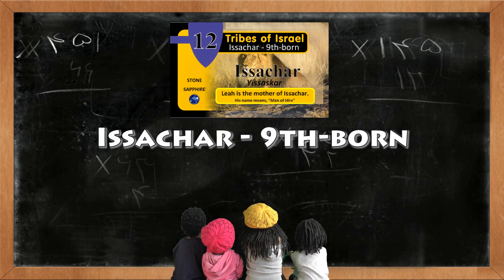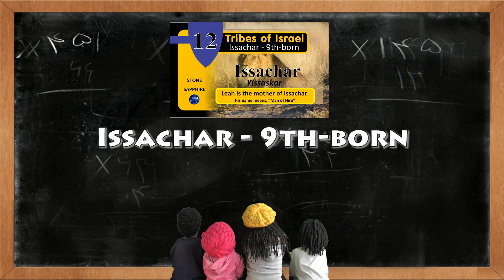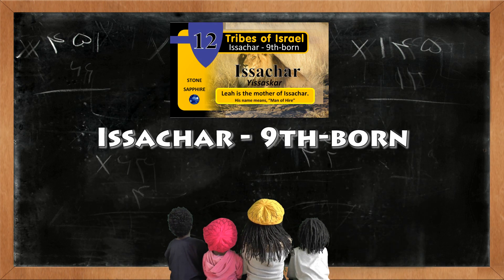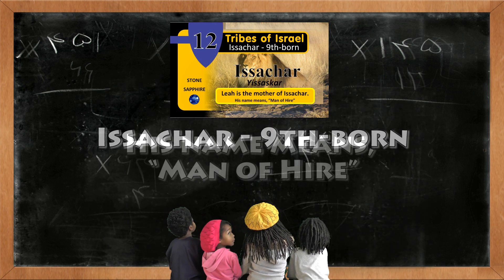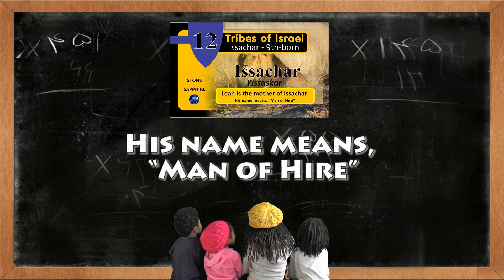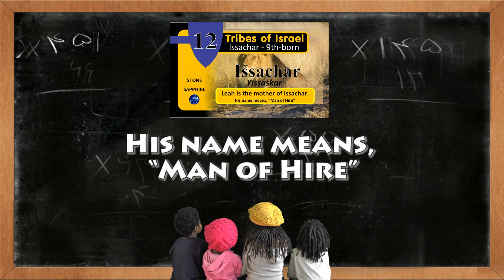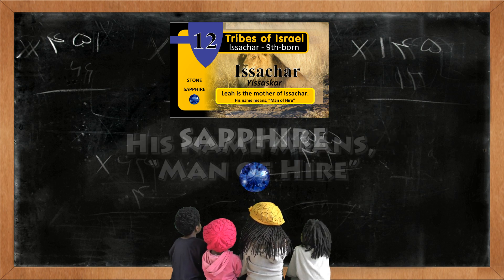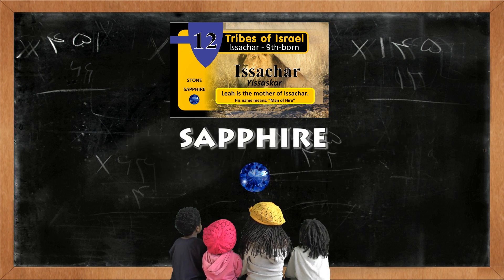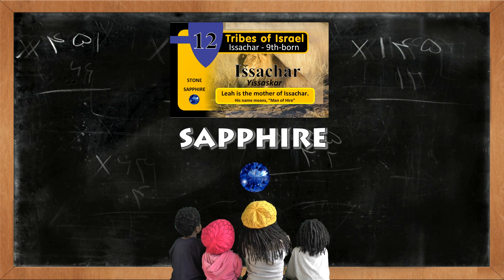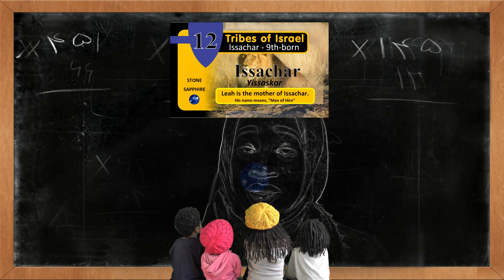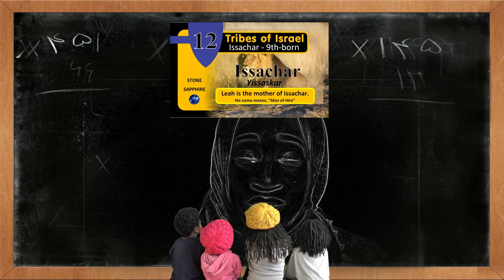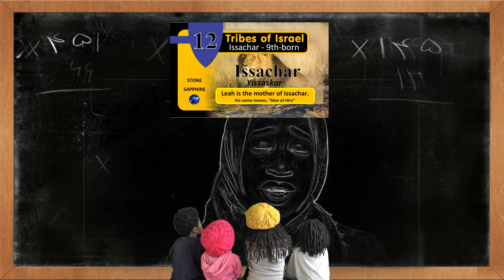Issachar is the ninthborn son. His name means Man of Hire. The sapphire represents the tribe of Issachar. Leah is the mother of Issachar.